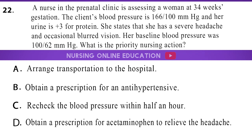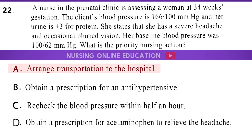Question 22: A nurse in the prenatal clinic is assessing a woman at 34 weeks gestation. The client's blood pressure is 166/100 mmHg and her urine is 3+ for protein. She states that she has a severe headache and occasional blurred vision. Her baseline blood pressure was 100/62 mmHg. What is the priority nursing action? A. Arrange transportation to the hospital. B. Obtain a prescription for an antihypertensive. C. Recheck the blood pressure within half an hour. D. Obtain a prescription for acetaminophen to relieve the headache. The answer is option A: Arrange transportation to the hospital.